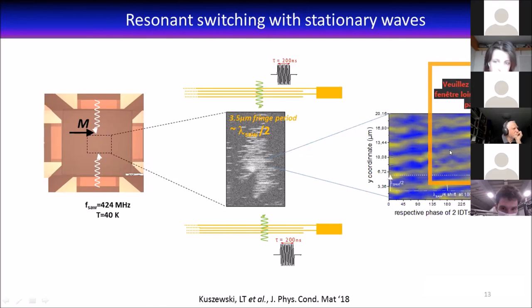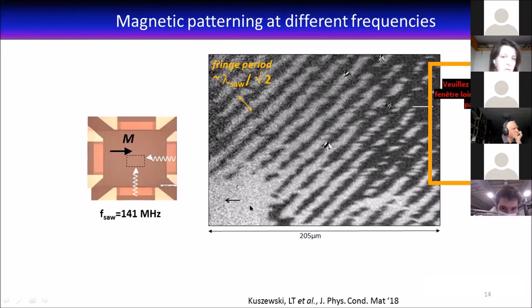We can also excite orthogonal transducers and then we get nice diagonal stripes. We could go on to do focusing, diffracting, lensing, etc. There's a lot to have fun with.